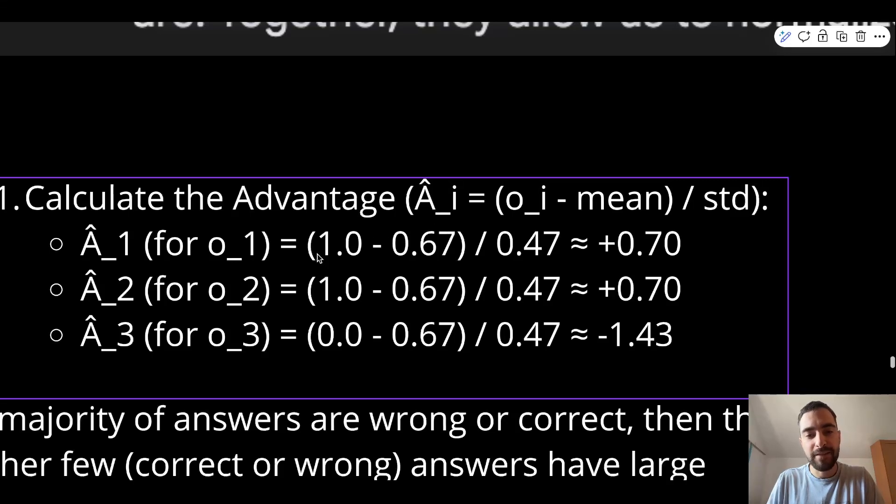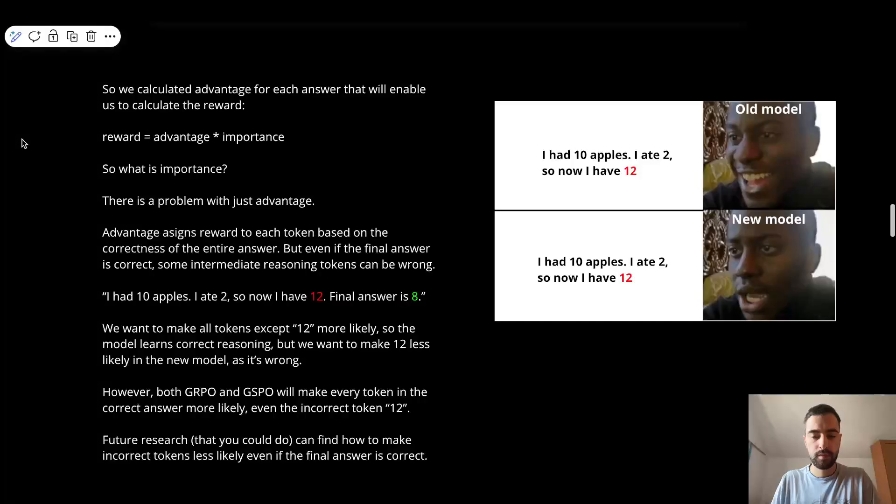And then that means that this number will be smaller. And so we are dividing smaller number by this same number, so we get smaller reward. And because there is few wrong answers, then mean will be away from the 0. So this will be bigger negative number. And then because we are dividing by the same number, then this will be bigger negative number. Okay, I hope they didn't bore you to death. So let's go to the second part.